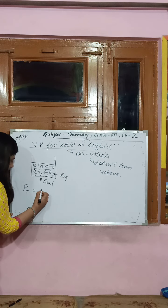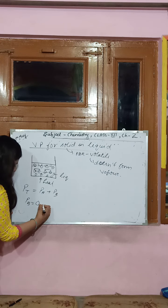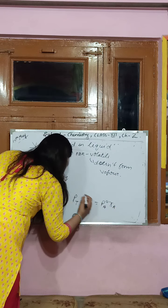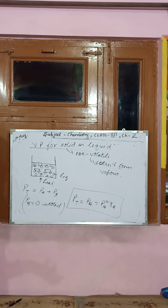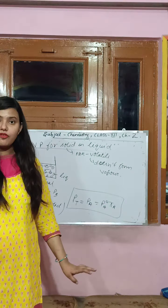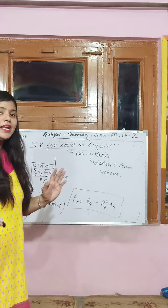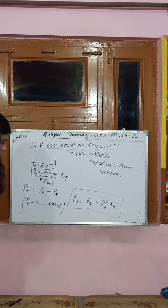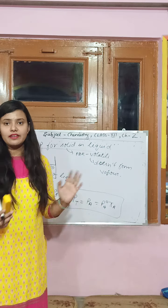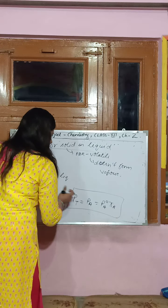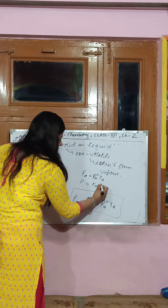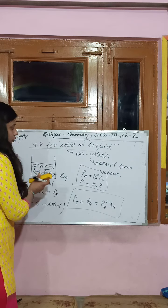So this equation P_total = P_A°·χ_A is valid for solid-liquid solutions. When you have a solid solute added, use this formula instead of P_A + P_B (since the solid does not convert to vapor). Also, for homework, you should see the relation between Henry's Law and Raoult's Law — Henry's Law is a special case of Raoult's Law, where K_H is the Henry's Law constant.